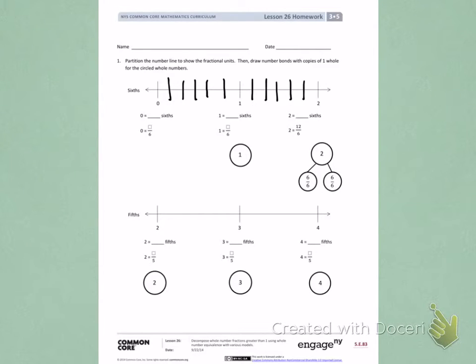I will then label my fractions. So I have 0 sixths, 1 sixths, 2 sixths, 3 sixths, 4 sixths, 5 sixths, 6 sixths, 7 sixths, 8 sixths, 9 sixths, 10 sixths, 11 sixths, and 12 sixths.